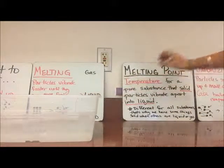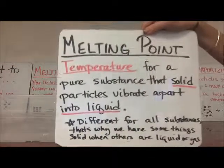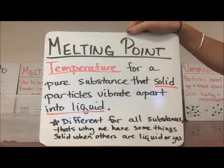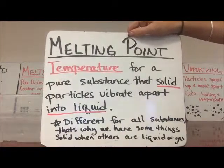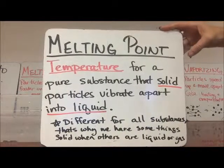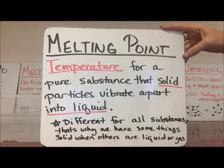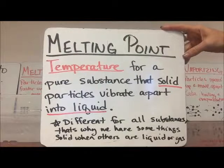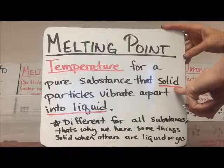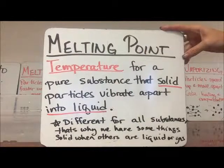Melting happens at a special temperature called the melting point, and this is a temperature that's different for every substance. We're going to get a little bit more into that in the next video. Basically, each substance has its own melting point that the particles will speed up, break apart from each other, and turn into a liquid.